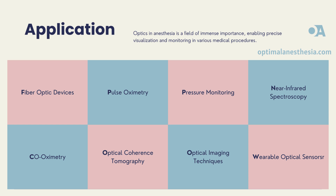Near-infrared spectroscopy is a valuable tool in monitoring cerebral oxygenation during anesthesia. By shining near-infrared light through the skull, NIRS measures the oxygenation status of brain tissue, aiding in optimizing patient outcomes. CO-oximetry provides a comprehensive assessment of a patient's oxygen-carrying capacity by analyzing the absorption of light at multiple wavelengths. This technique is crucial in managing anesthesia effectively, ensuring adequate oxygen delivery to tissues.